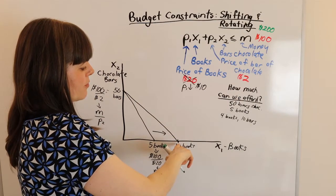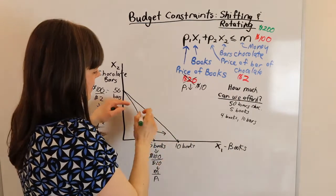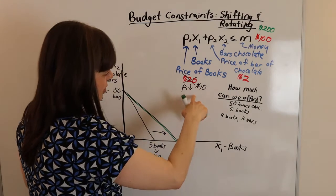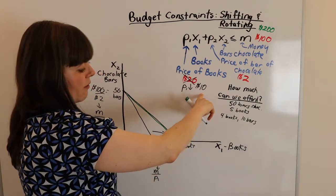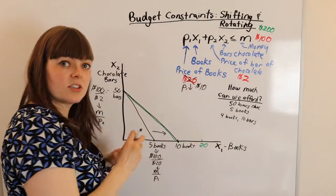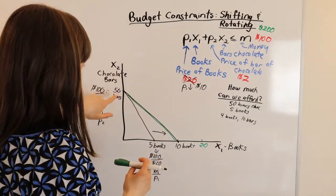Let's just look at the number of books we can afford. Well, previously, let's start with this budget constraint. We've got a $10 price in books. We can now afford 20 books. So we're just doing this using very simple numbers. And it's helping us sort through this.